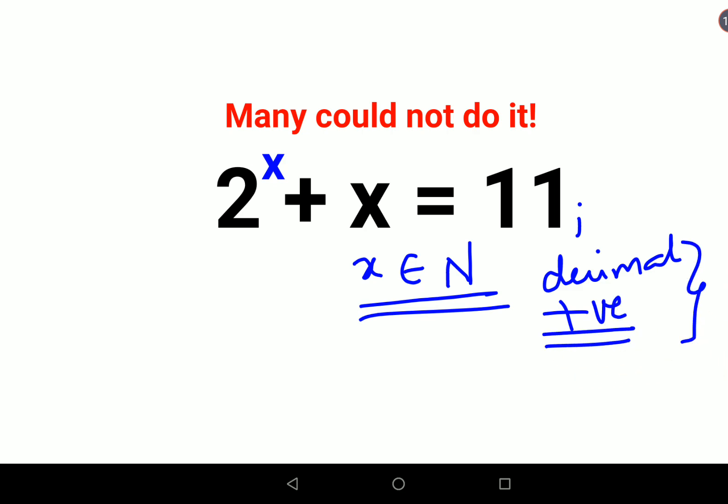Let's take x as 1. So 2 plus 2 raised to 1 plus 1, that is obviously not equal to 11. Now let's try for 2 raised to 2, 2 raised to 2 plus 2, that is also not equal to 11. Now let's try 2 raised to 3 plus 3, that gets you 2 raised to 3 is 8 plus 3, that gets you 11.